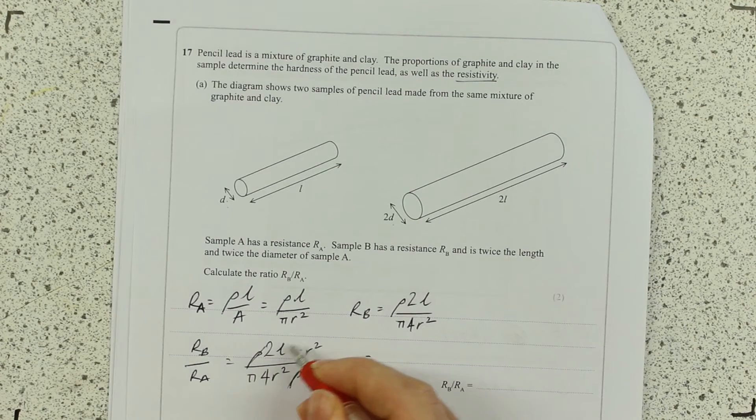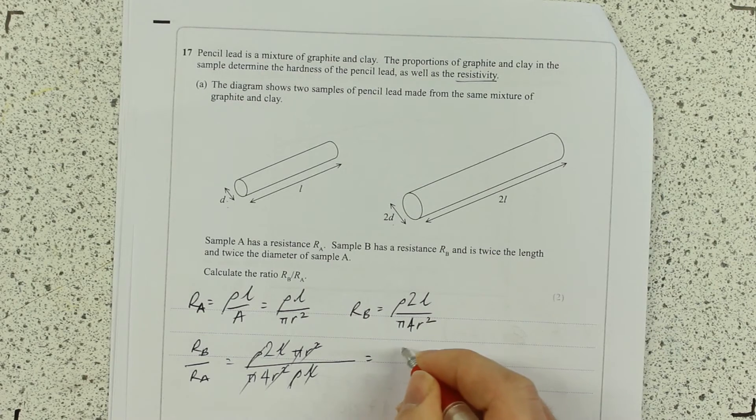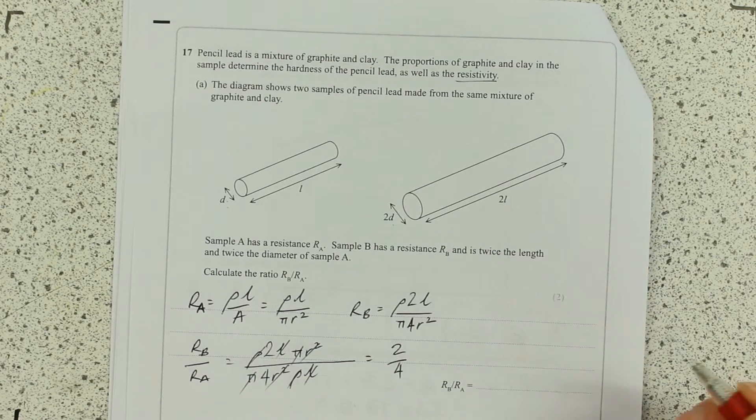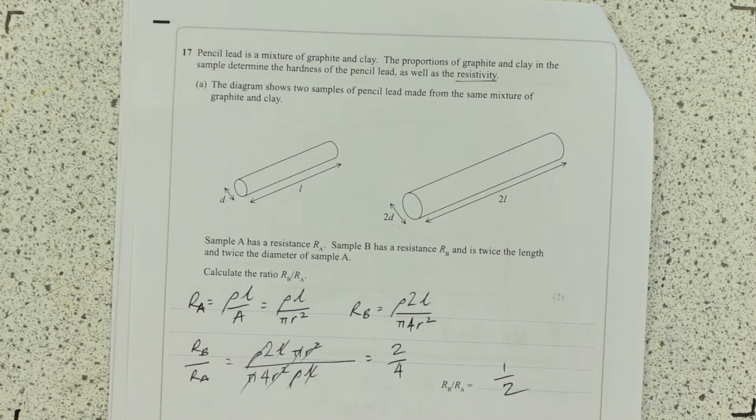Now I can do my cancellations. Rho cancels, L cancels, π cancels, R squared cancels. And you can see the ratio we're left with is 2 over 4, or 1 over 2. And that is the ratio.